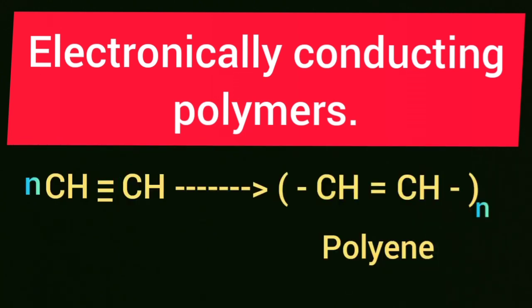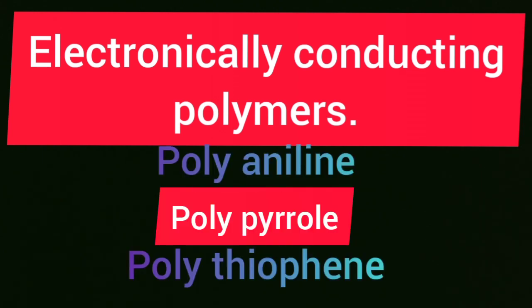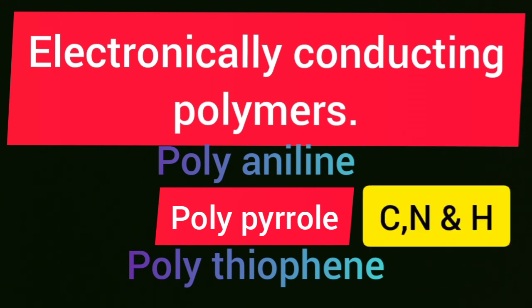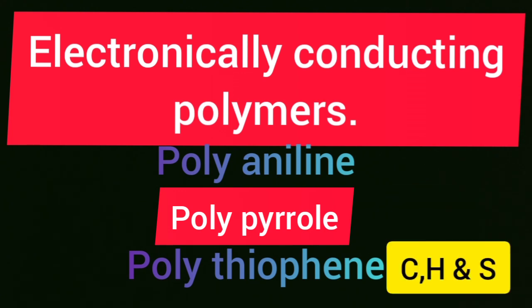Several other organic conducting polymers have been made. For example, polyaniline, polypyrrole, and polythiophene. Polyaniline contains carbon, hydrogen, and nitrogen. Polypyrrole also contains carbon, nitrogen, and hydrogen. Polythiophene contains carbon, hydrogen, and sulfur as its chief constituents.